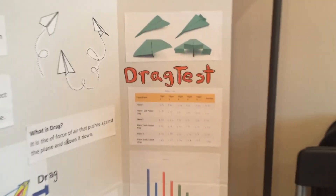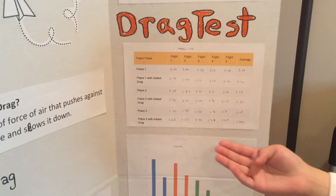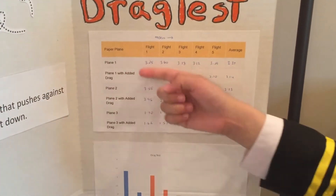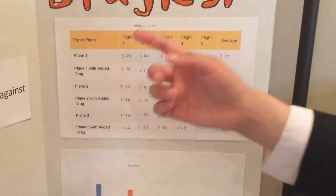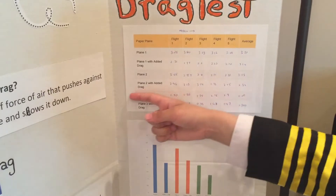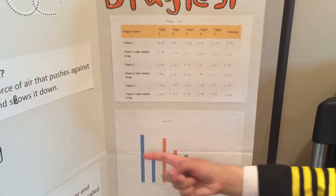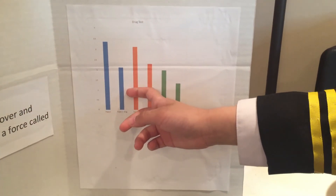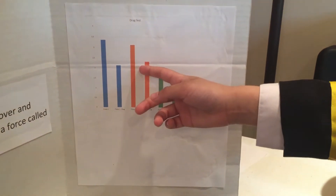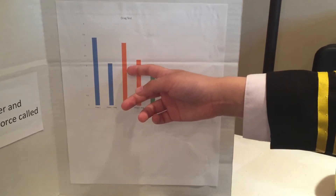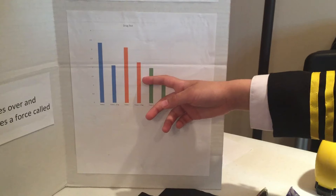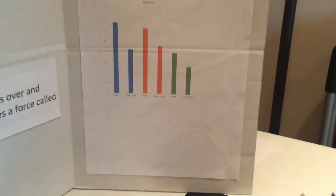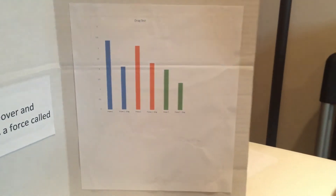Can you show me what this table is? This chart shows how far airplane one went and how many meters it went — same for airplane two and airplane three. This is how far airplane one went without the drag, and this is how far it went with the drag. Same comparison for airplane two and airplane three. So it looks like every time we added drag, the airplane slowed down a lot.